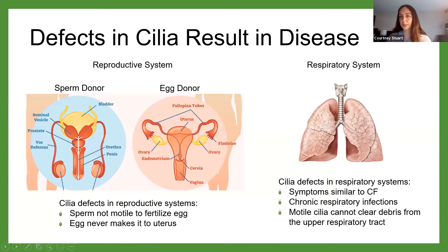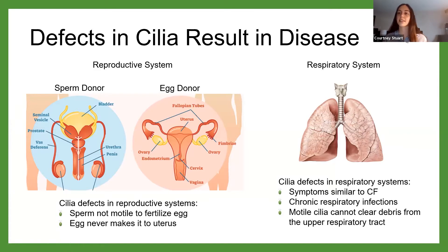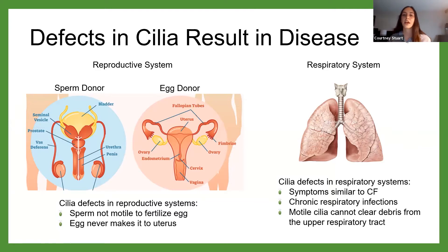And in another system, the respiratory system, some of you guys might be familiar with cystic fibrosis. Cystic fibrosis is characterized by chronic respiratory infections. Cystic fibrosis isn't necessarily caused by defects in the cilia; however, in the respiratory system, defects in the cilia can cause cystic fibrosis-like symptoms. Because that debris is not being cleared from your upper respiratory tract since the cilia are no longer motile, you can have chronic respiratory infections as a result.